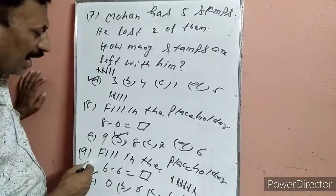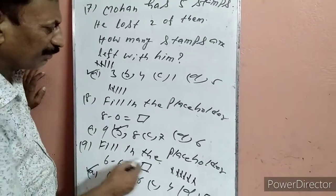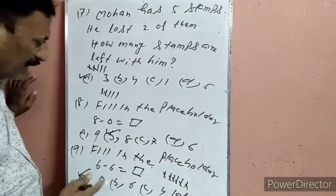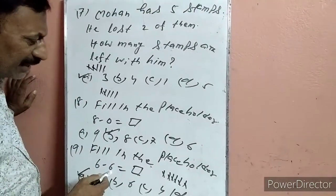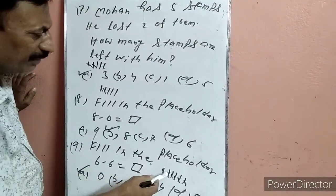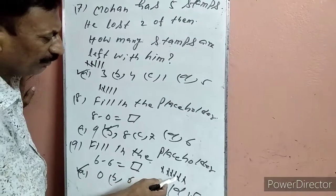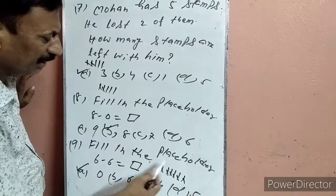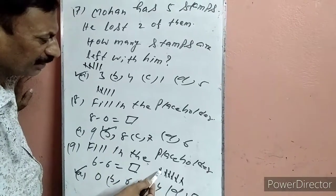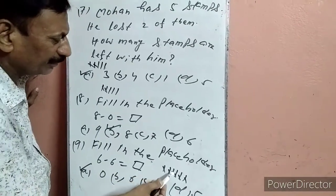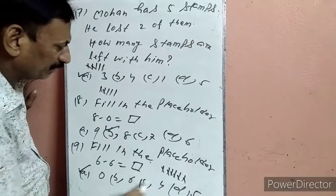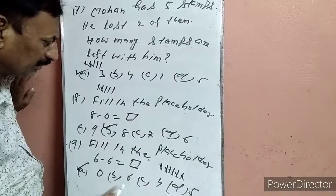Question 9: Fill in the blank — 6 minus 6. हम 6 line drop करेंगे: 1, 2, 3, 4, 5, 6. 6 minus 6 को subtract कर दिया: 1, 2, 3, 4, 5, 6. बच गया 0. Answer 0.